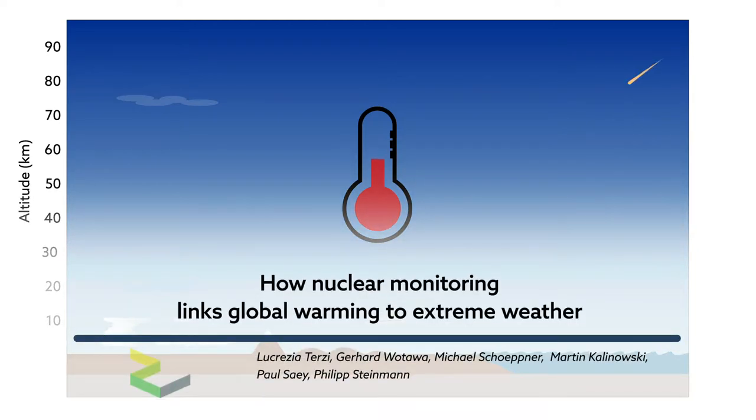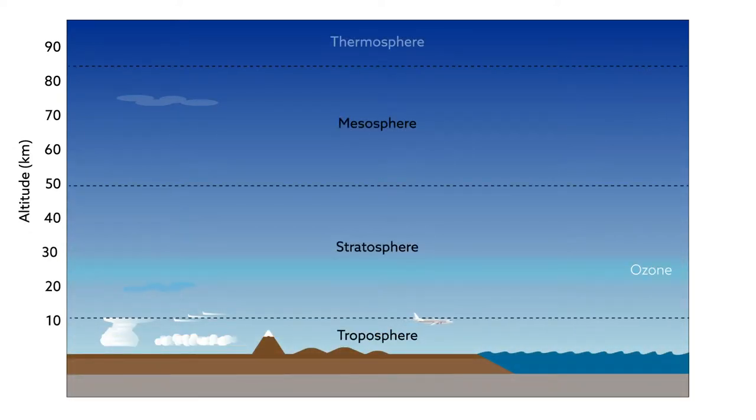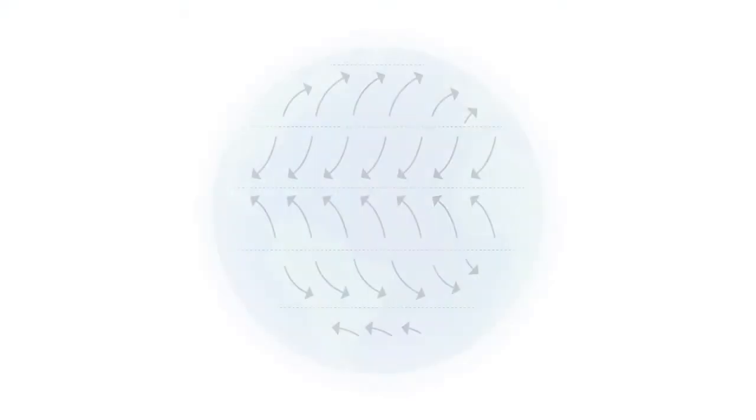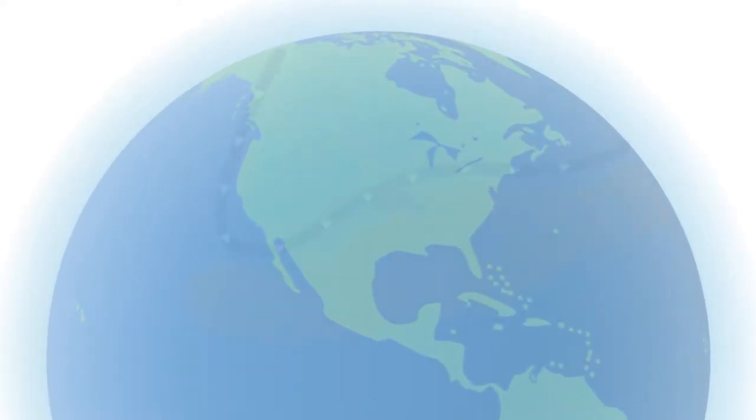Despite advances in climate science, certain aspects of global warming are known only with low or medium confidence. Among the most important are the height of the troposphere, the part of the atmosphere where weather occurs, and the poleward movement and weakening of atmospheric circulation. These processes are closely linked to stalled extreme weather increasingly observed at mid-latitudes.